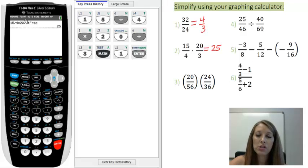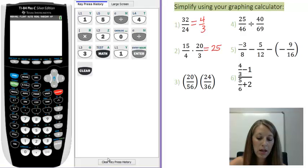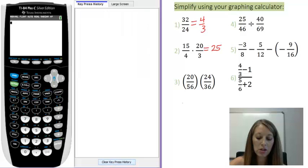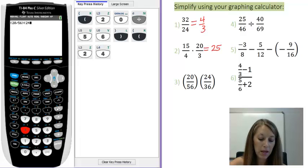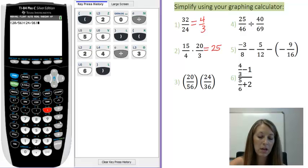Example number three is just to show you a different way that the calculator understands how to represent multiplication. Instead of using the times button, you can actually use the separate parentheses, just like we know it to mean. The calculator knows it to mean multiplication at the same way. So, open parentheses, 20 divided by 56, close parentheses, open the next parentheses. Notice I'm not even inserting a multiplication symbol here, because the calculator knows that this means multiplication.